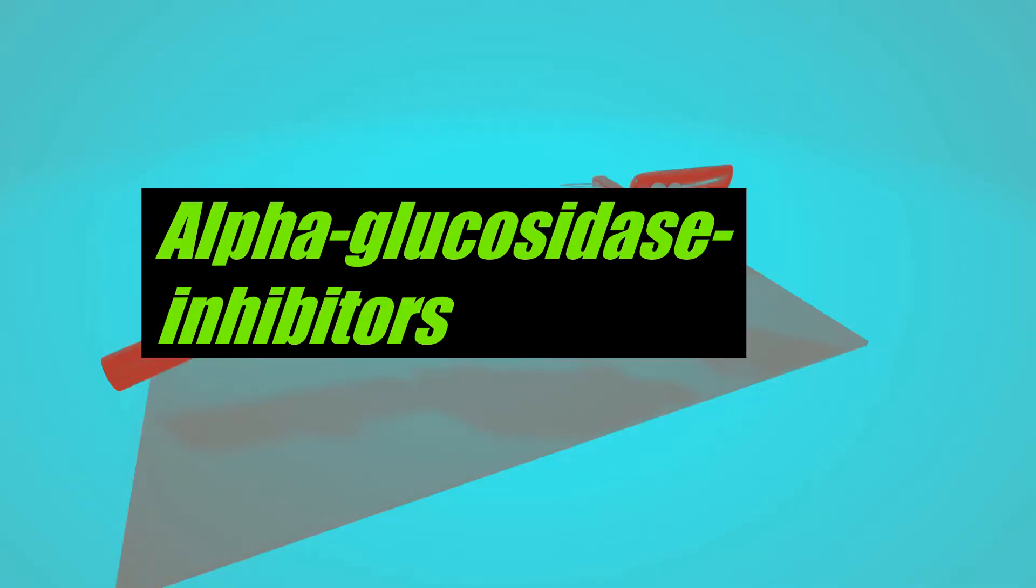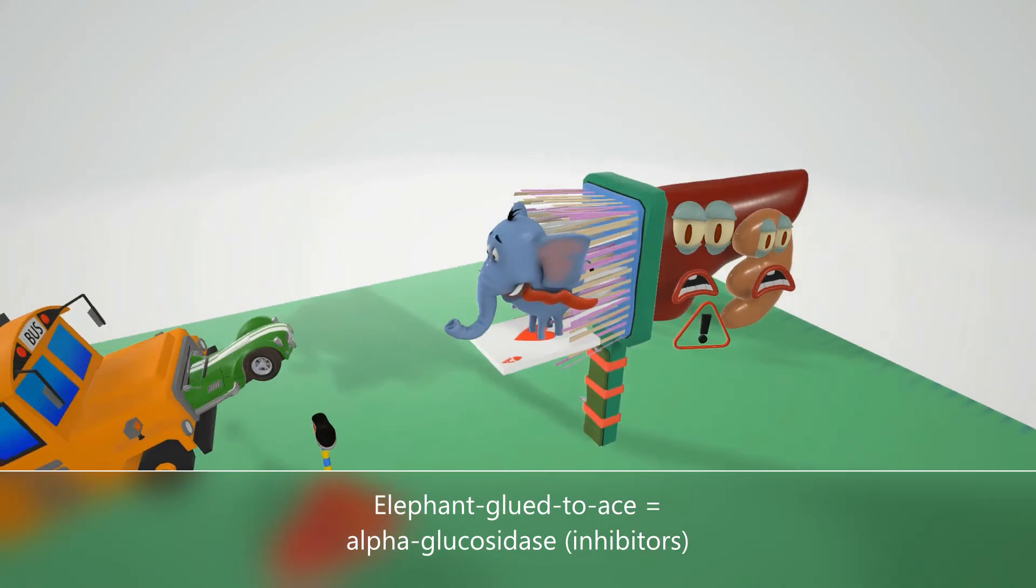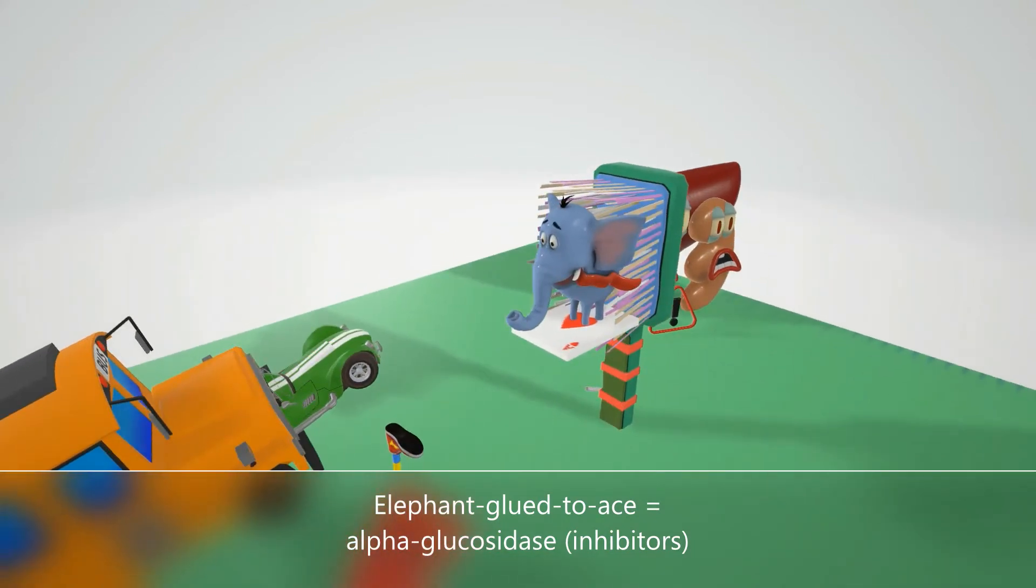Okay, in this scene we're going to talk about the alpha glucosidase inhibitors, and it's going to be represented by this elephant that's glued to the ace. There's this elephant over here and he's a little bit sad because he's glued to the ace. Elephant glued to the ace for alpha glucosidase.